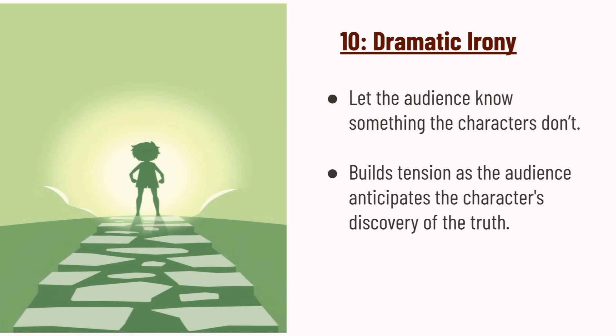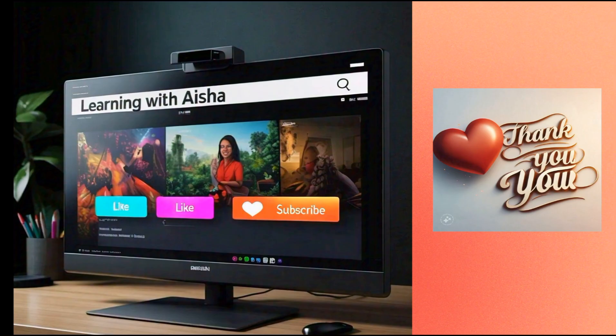The last technique we discuss in this video is dramatic irony. Dramatic irony lets the audience know something the characters do not know. It builds tension as the audience anticipates the characters' discovery of the truth and wants the characters to know the reality as soon as possible.